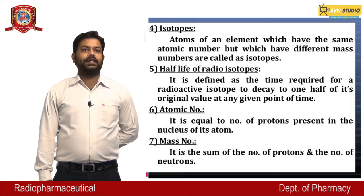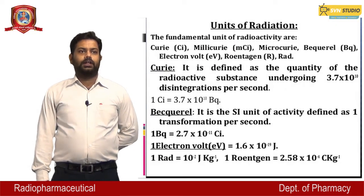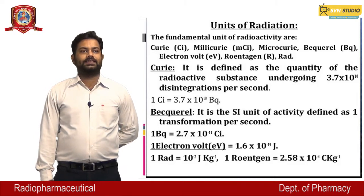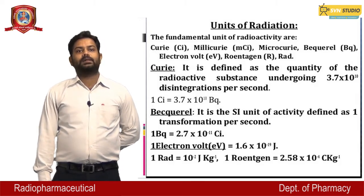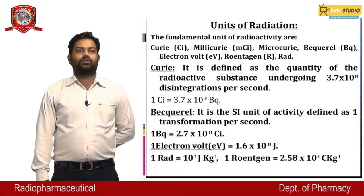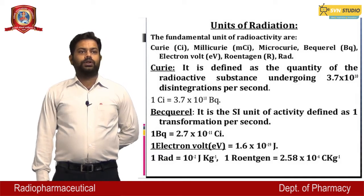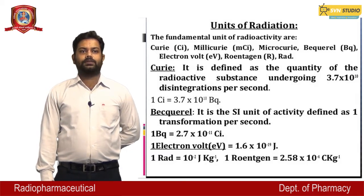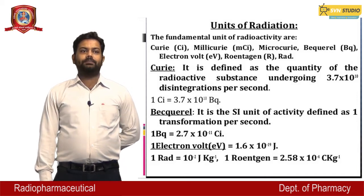The fundamental units of radioactivity are: Curie (Ci), Millicurie (mCi), Microcurie, Becquerel (Bq), electron volt (eV), Roentgen (R), and RAD. Curie is defined as the quantity of radioactive substance undergoing 3.7 × 10¹⁰ disintegrations per second.